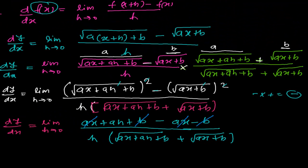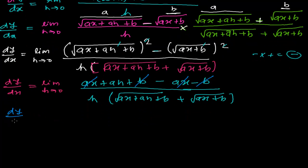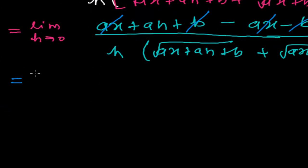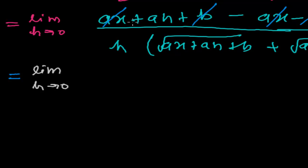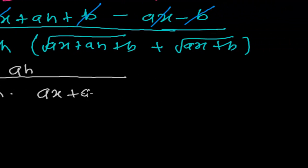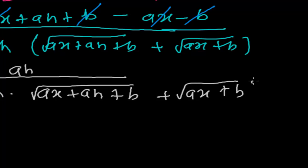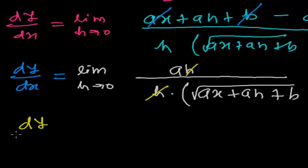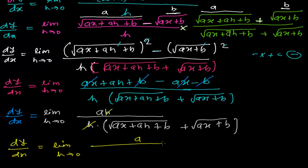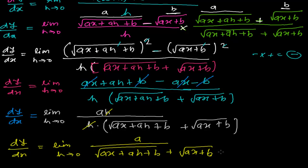We are left with dy by dx equals the limit as h tends to 0 of a times h, divided by h times root over ax plus ah plus b plus root over ax plus b. Now we can cancel h from the numerator and denominator, leaving a divided by root over ax plus ah plus b plus root over ax plus b.